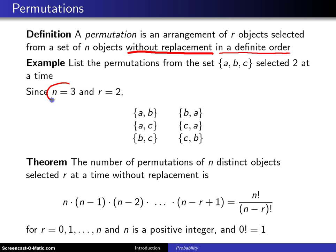In this particular case, we have n equals three objects, and those three objects are the letters a, b, and c, and we are going to take them r equals two at a time.